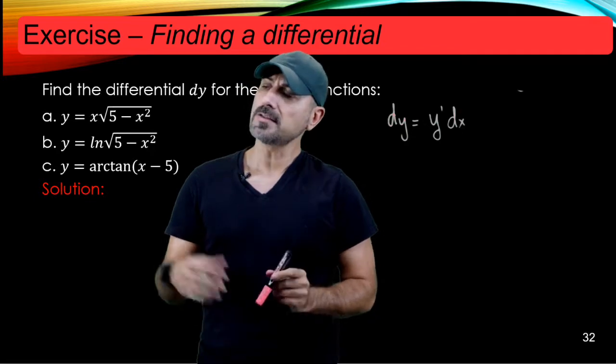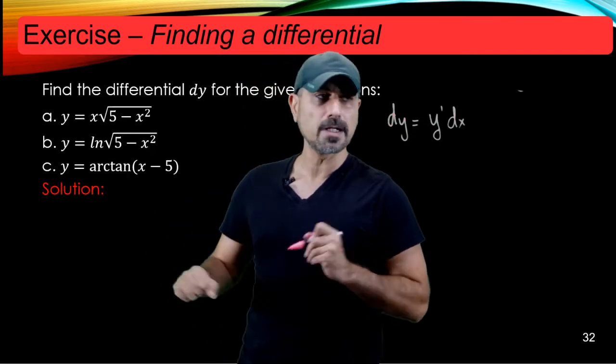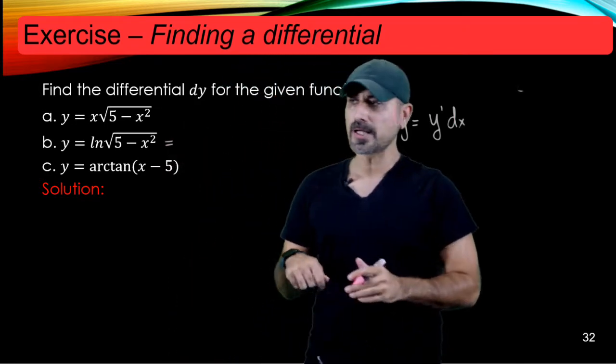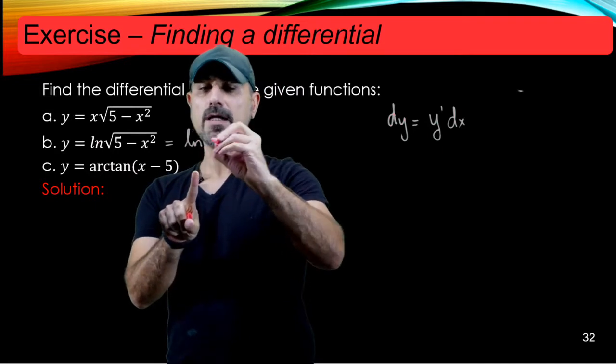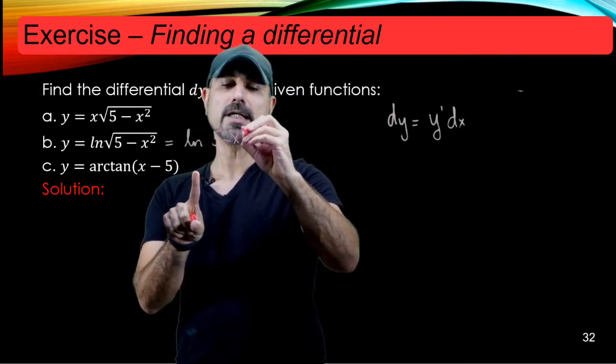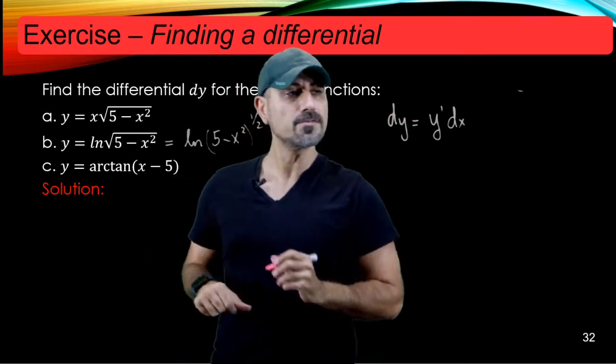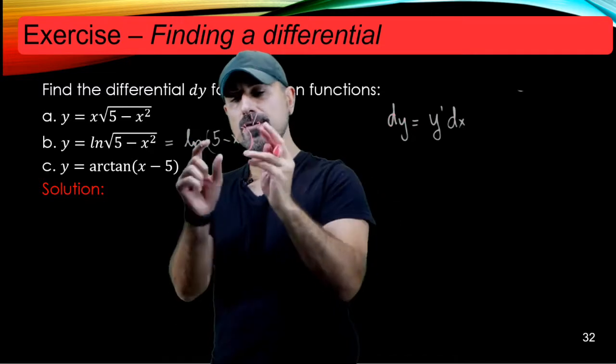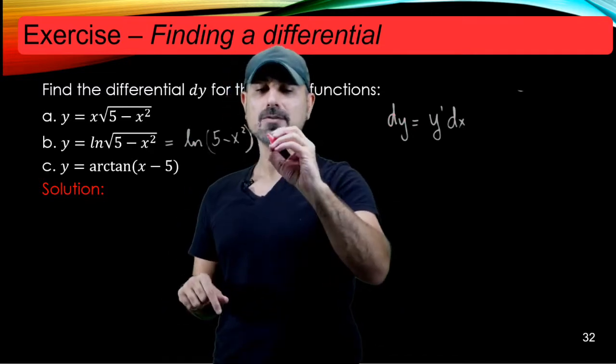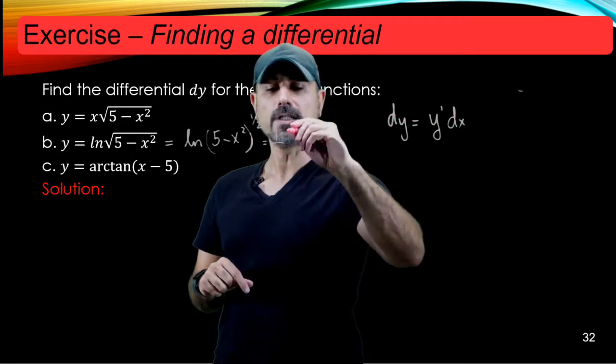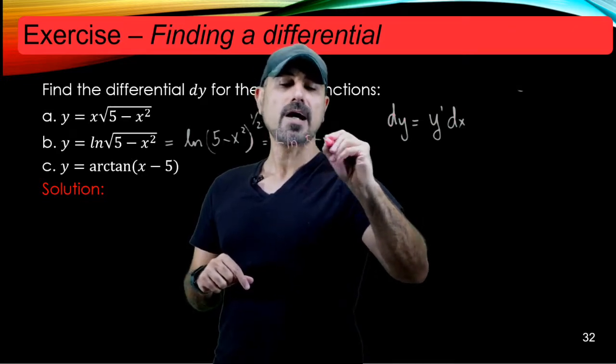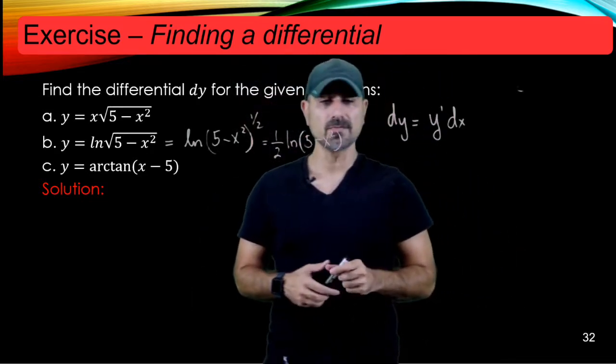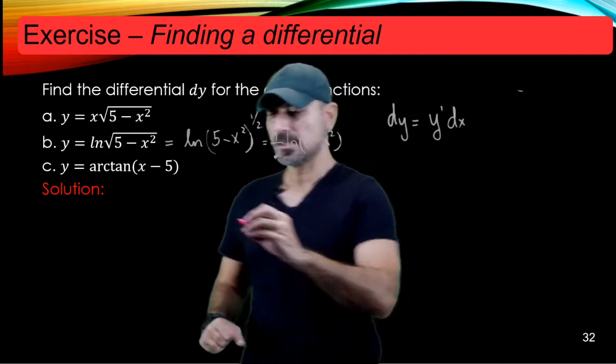Alright, for part b we should remember how to take care of the derivatives of ln functions. But before I hit the road, I am going to try to simplify that expression because this is equal to ln of 5 minus x squared to the power of 1 half. And we remember from pre-calculus that if you have ln of something raised to a power, you can always pull out that power and write it as 1 half ln 5 minus x squared. So once we have this simplification, then we can go ahead and use the rule of differentiation for the derivative of ln.